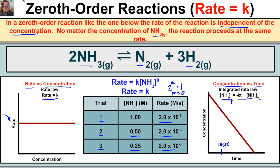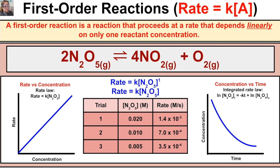In a first order reaction, the reaction proceeds at a rate that depends linearly on only one reactant concentration. Let's look at the reaction where N2O5 decomposes into NO2 and O2. From the experimental trials, as we double the concentration from trial three to trial two, we can see that the rate is also doubling.